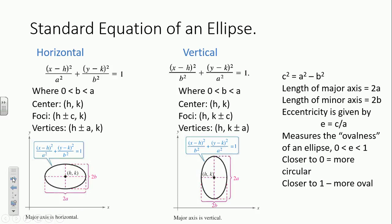The length of your major axis is always twice a. We'll find the larger denominator, take the square root of it, and that's the distance from the center to the vertex. We'll double that to get the length of the major axis, and we'll double b when we want to know the length of the minor axis. To find the foci, we use c squared equals a squared minus b squared. The foci are always on the major axis.